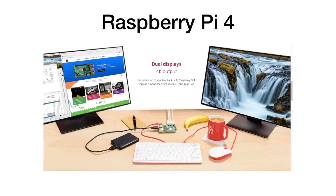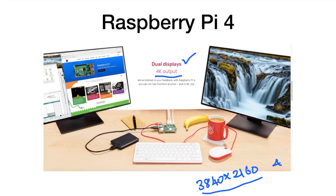Looking at this slide taken from the Raspberry Pi website, this recent Raspberry Pi 4 can power 2 displays concurrently with an output of 4K. 4K means a pixel rating of 3840 by 2160, whereas full HD is 1920 by 1080. So the Raspberry Pi 4 can display to 2 different 4K displays simultaneously.